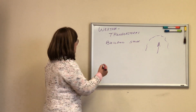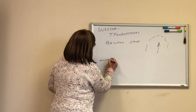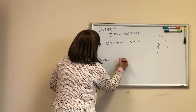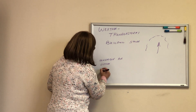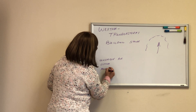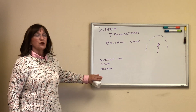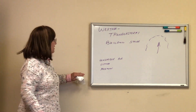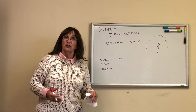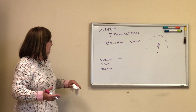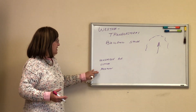What do we need for a thunderstorm? We need to have unstable air, we also need a lifting action, and we need moisture. If we don't have all three of those elements we're not going to get a thunderstorm.